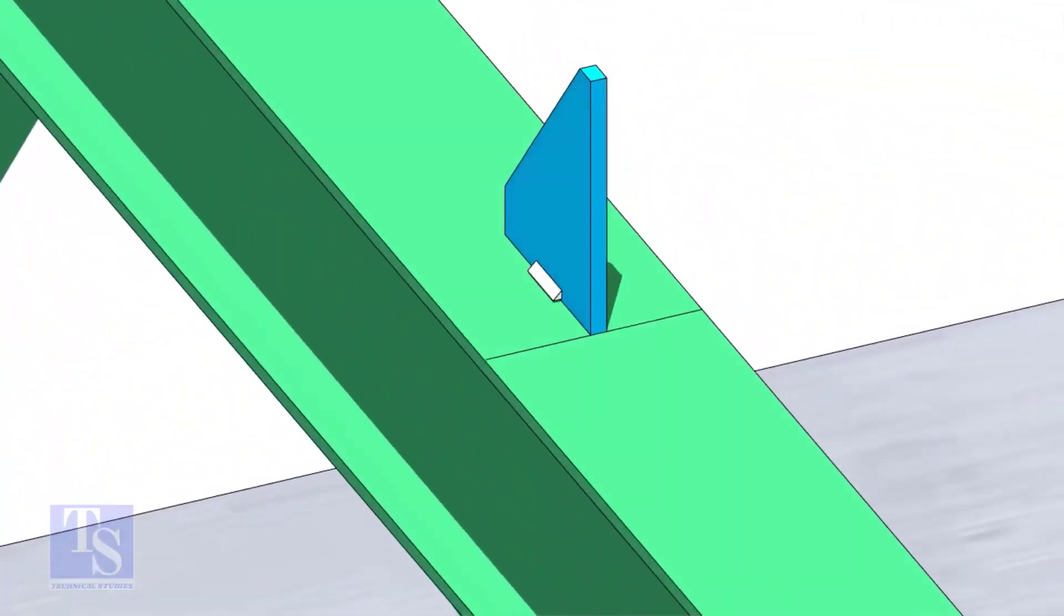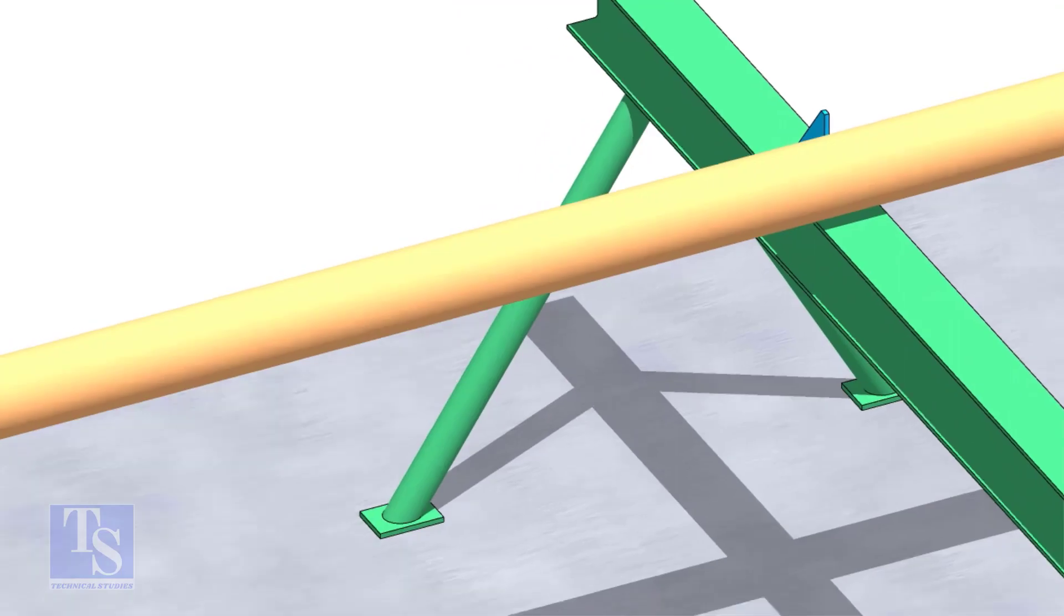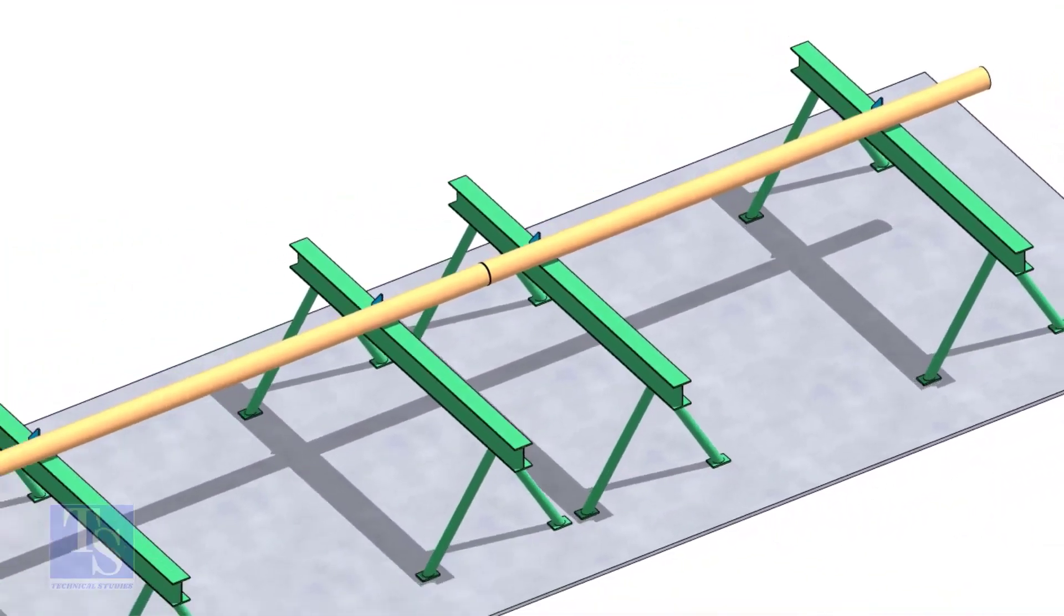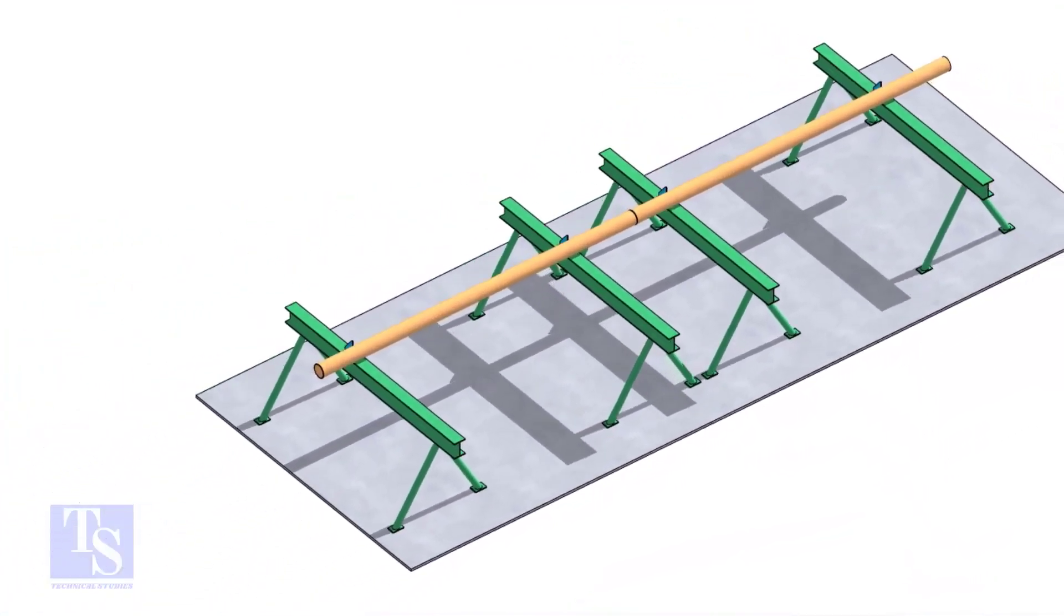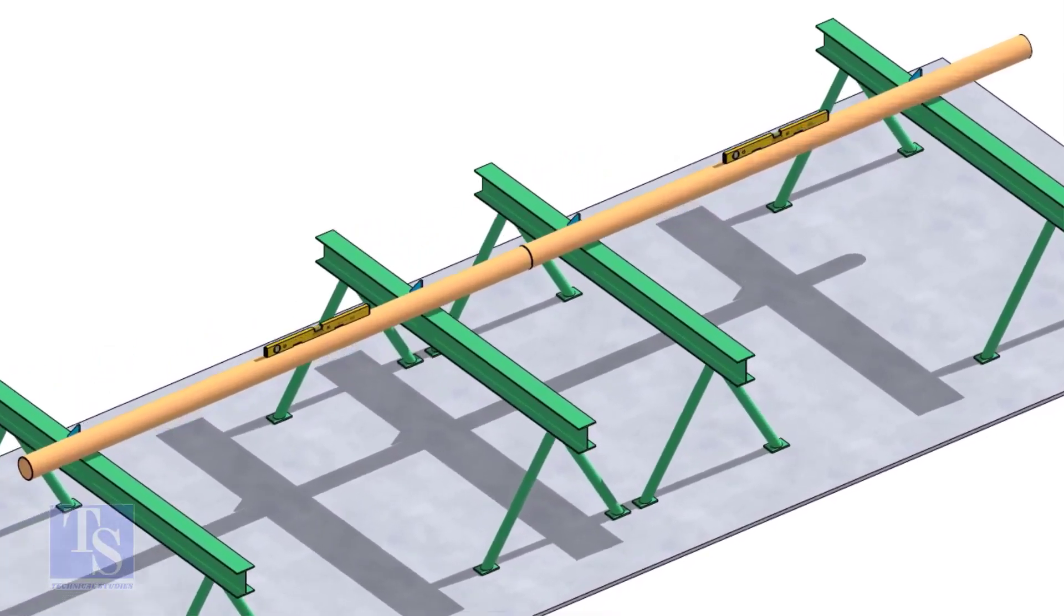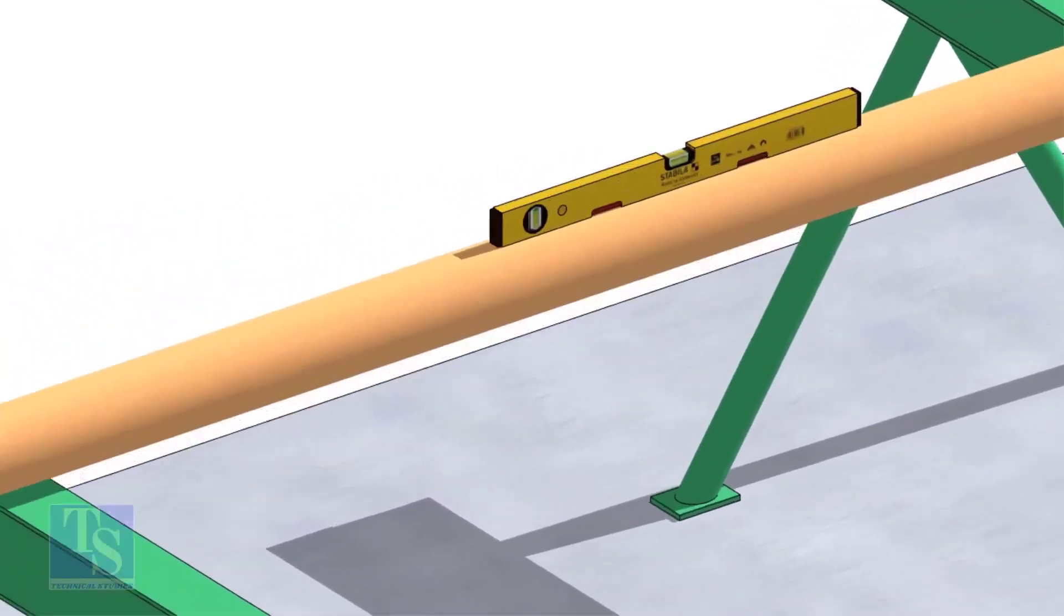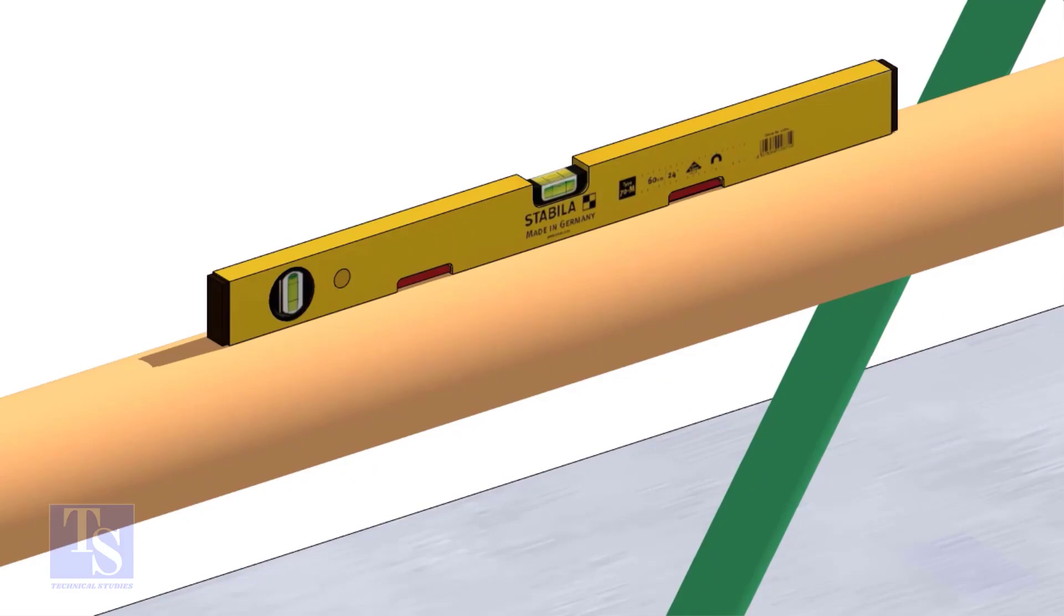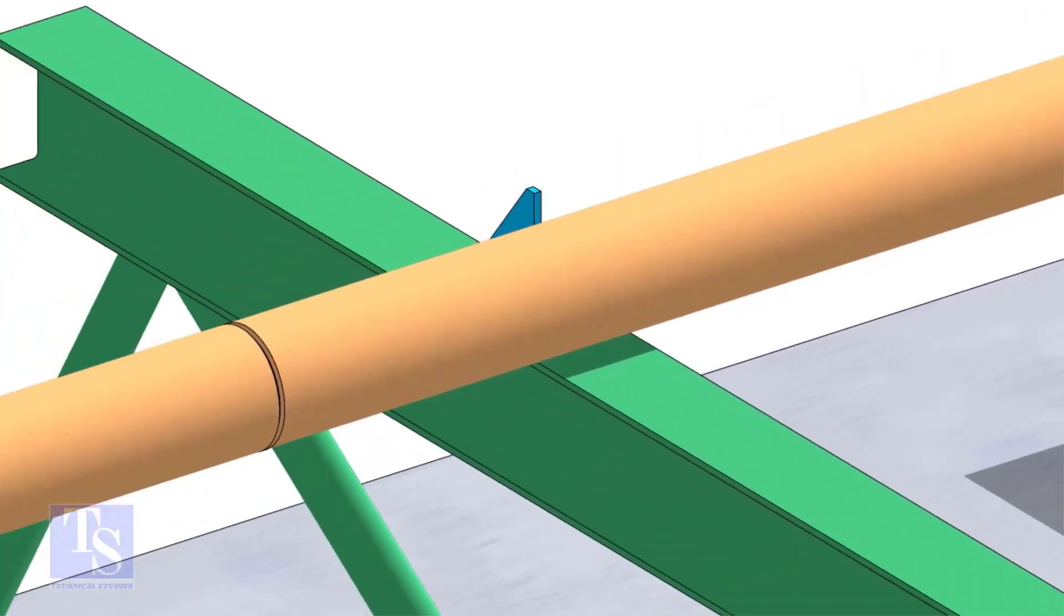Put the pipes on the stands, touching the stopper plates, as shown. The joint shall be in between the supports. Now the pipes are already straight, horizontally and vertically. You can cross-check the level of the pipes.